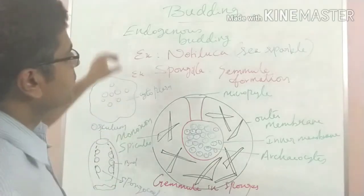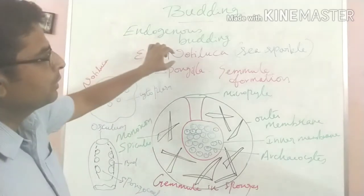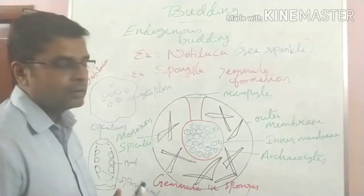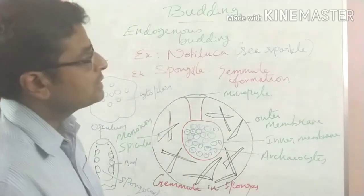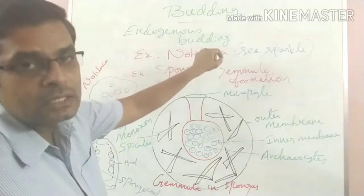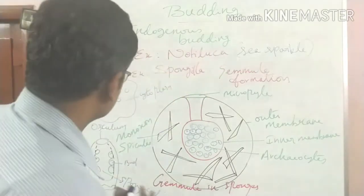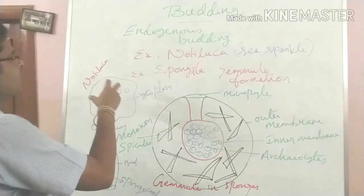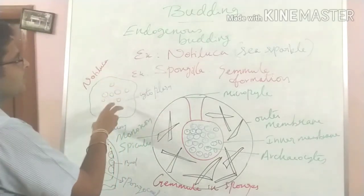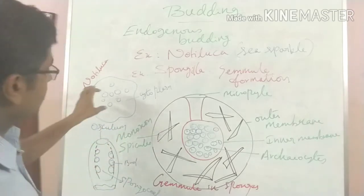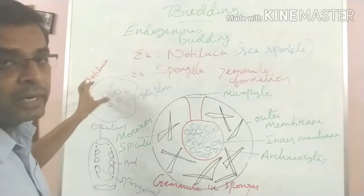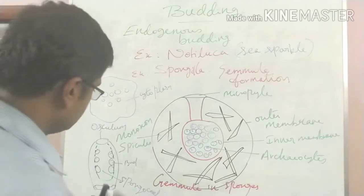For endogenous budding, an example is Noctiluca, commonly called sea sparkle. It is a dinoflagellate. More than 100 buds are formed inside the cytoplasm of the parent cell. The buds which are not separate remain attached to the parent body.